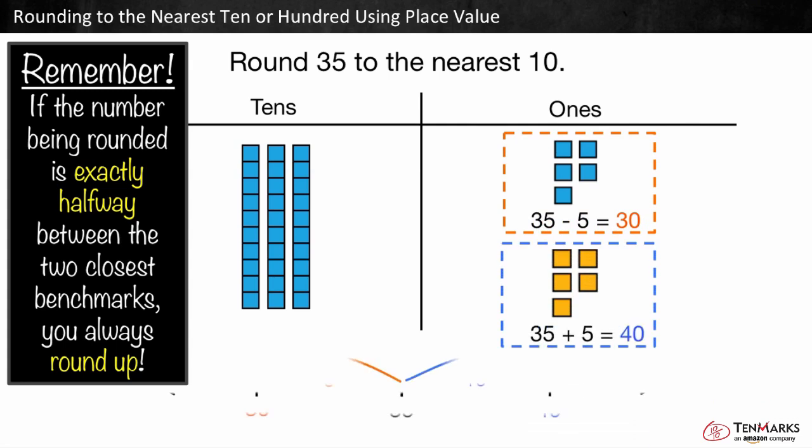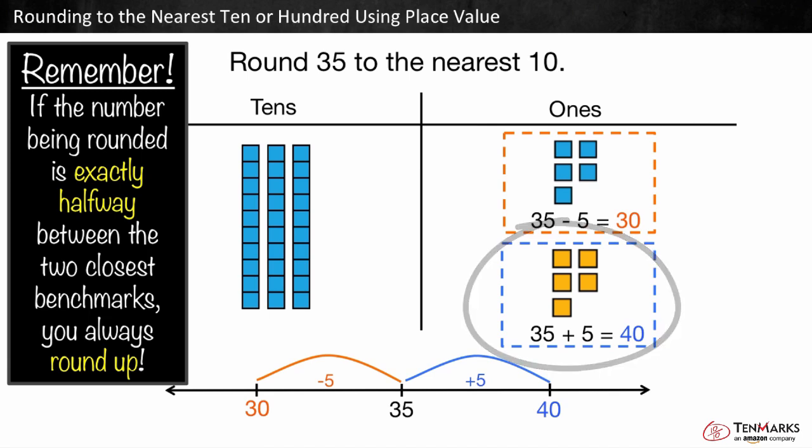We can see this on a number line as well. When the number being rounded is exactly halfway between the two benchmarks we always round up, and in this case we round up to 40. So 35 rounded to the nearest ten is 40.